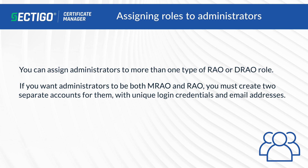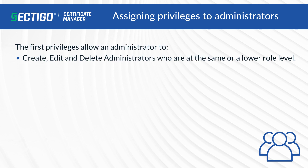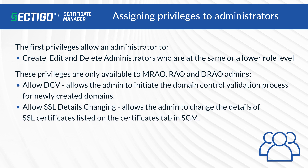If you want administrators to be both MRAO and RAO, you must create two separate accounts for them with unique login credentials and email addresses. The first privilege allows an administrator to create, edit, and delete administrators who are at the same or lower role level. For example, an RAO admin can create, edit, or delete other RAO admins or any DRAO admins.